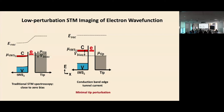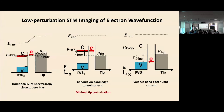By measuring not the dI/dV but the net tunneling current, the tunneling current tells you what is the local electron density in the conduction band that can tunnel into the tip. A similar scheme can be used for hole samples — apply a bias voltage that compensates the work function difference, and holes can tunnel into the tip. By measuring the tunneling current itself, you can know the local electron or hole density.